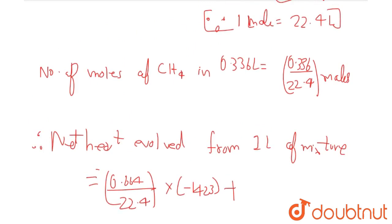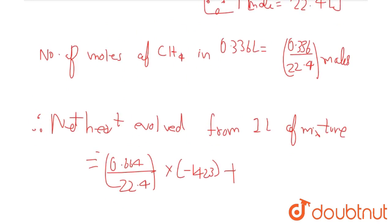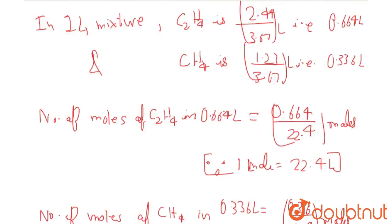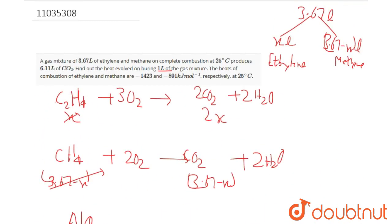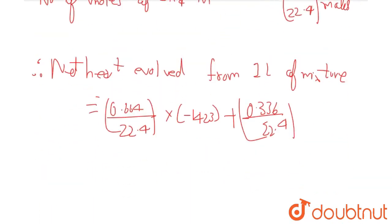0.336 divided by 22.4 times minus 891 kJ for methane. This whole calculation will be in kilojoules.